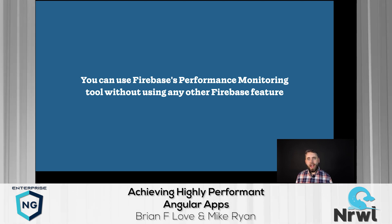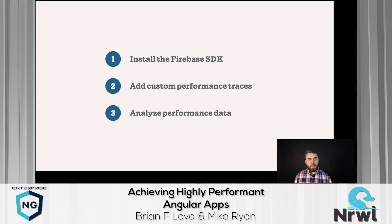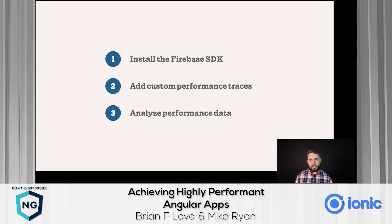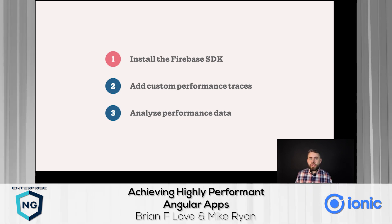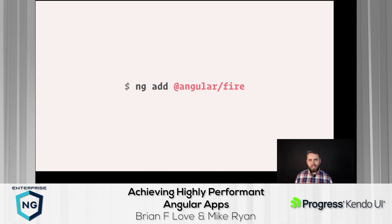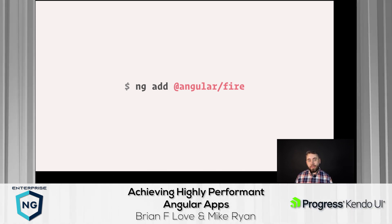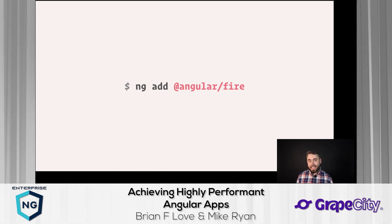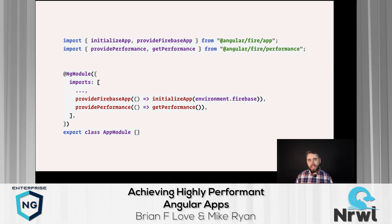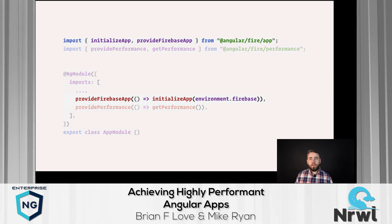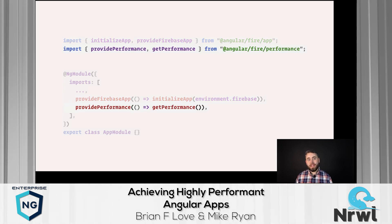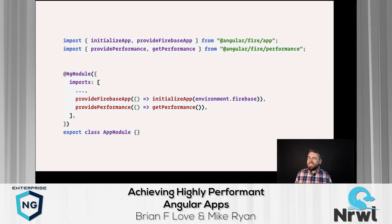To use the SDK we need to do three things: install it, add custom performance traces, and analyze the data. Step one: make a Firebase project, give it a name, choose a web app as the project type. Then run `ng add @angular/fire` — the add schematic gives you a wizard to configure every aspect of the Firebase SDK and lets you choose which SDKs to enable. Make sure you pick the Performance Monitoring SDK. When you inspect your app's root NgModule you'll see two changes: the Firebase app configured with your project settings, and the performance SDK set up.